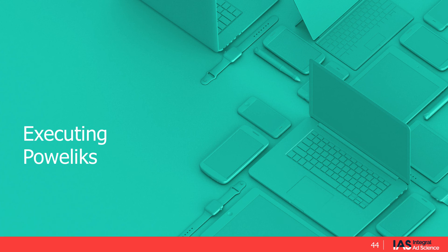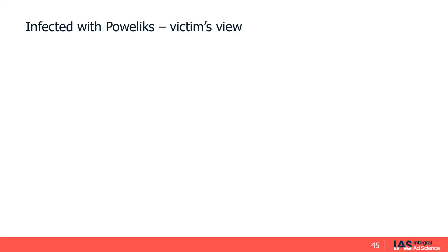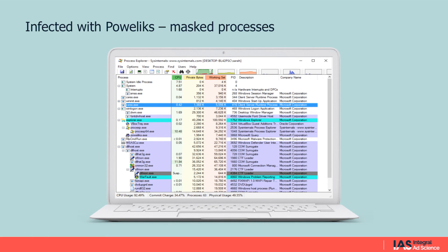Now it's time to execute Powelikes. This is what a victim sees when they execute Powelikes — nothing. That's what good ad fraud malware does: you don't know you're infected. But using special tools, we can see some suspicious activity. What we're seeing here is a list of all processes running. This doesn't even look suspicious to a lot of people — I think this would pass a lot of IT professionals too. You'll see that every application here is signed by Microsoft — these are all real processes. But to a malware analyst, I can see that these processes shouldn't be running in an idle environment.